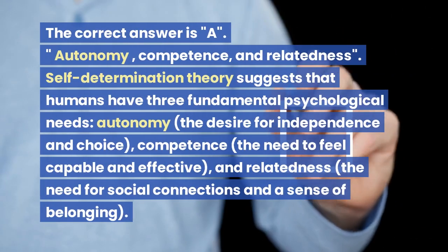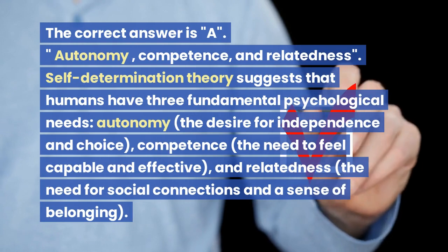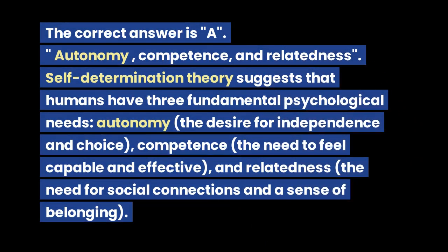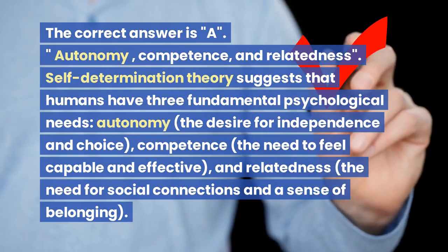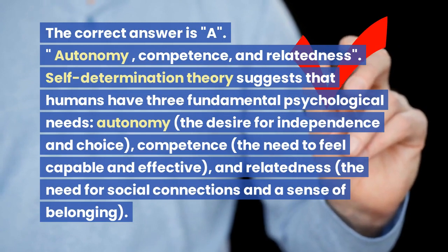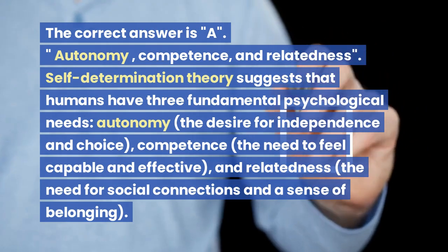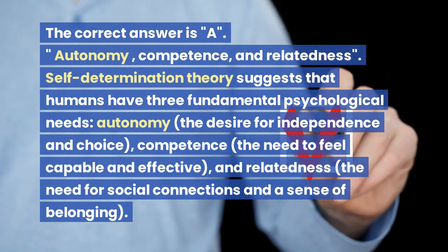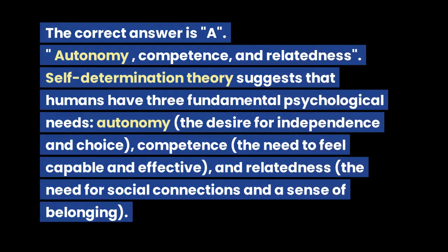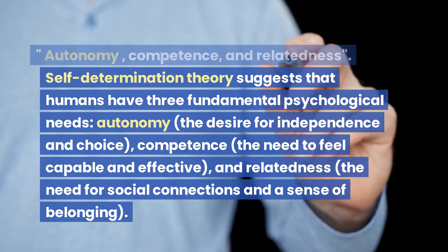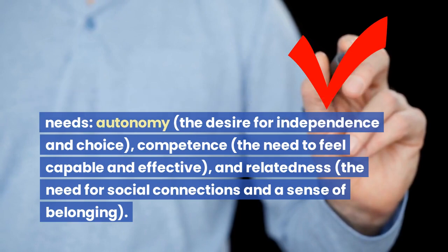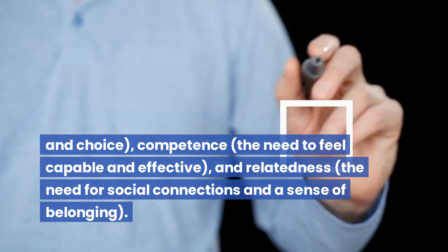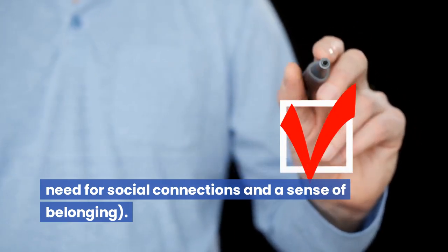The correct answer is A. Autonomy, competence, and relatedness. Self-determination theory suggests that humans have three fundamental psychological needs: autonomy — the desire for independence and choice; competence — the need to feel capable and effective; and relatedness — the need for social connections and the sense of belonging.